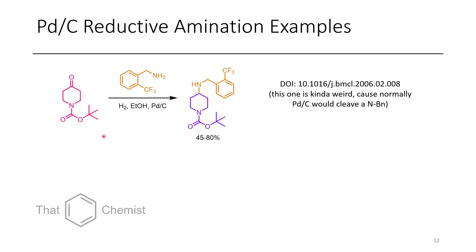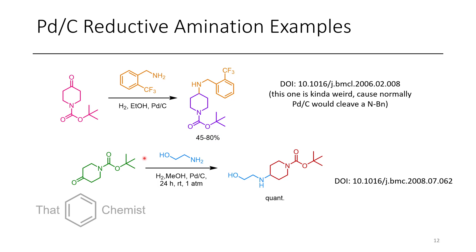One example is the conversion of an N-Boc-protected piperidinone, which can be reductively aminated using benzylamine. This is a somewhat unusual example because normally if you have palladium on carbon with hydrogen, you'll actually cleave benzylic ethers and benzylamines — so this is a special case, which is probably why their yield varied. In another example, the same starting material is treated with ethanolamine, which undergoes reductive amination as well, with quantitative conversion observed.